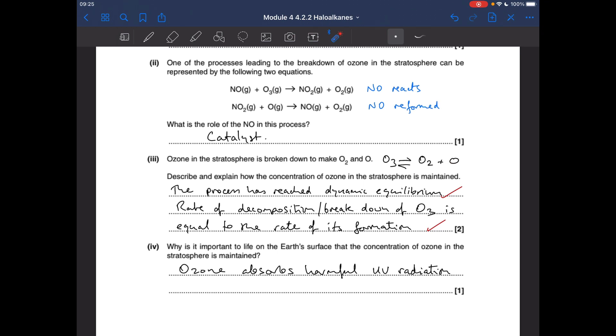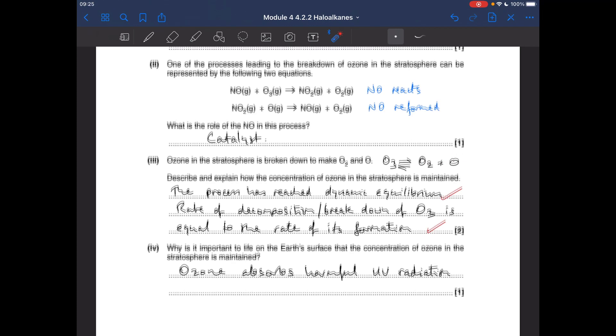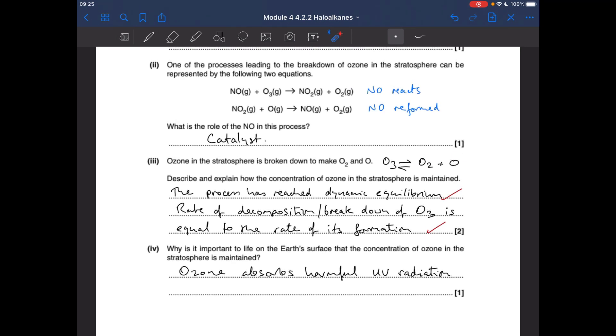Why is the concentration of ozone maintained? It's because this has reached dynamic equilibrium. The rate of the forward reaction, the rate of the breakdown of ozone, is equal to the rate of the formation of ozone by the recombining of those two. And finally, why is it important that this concentration of ozone is maintained in the stratosphere? Because ozone absorbs harmful UV radiation.